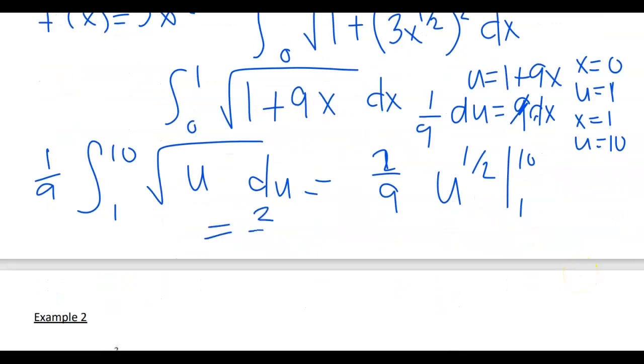And so that's going to be two ninths times the square root of 10 minus 1. And if you plug that into a calculator, it said three decimal places, you get 2.268.